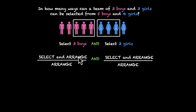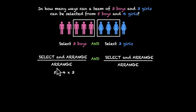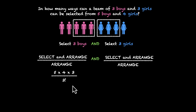If we're selecting and arranging — where order does matter — we pick the first boy, the second boy, and the third boy. The first boy can be picked in five ways, the next in four, and the third in three ways: 5 × 4 × 3. But the order does not matter — we're just selecting — so we divide by the number of ways of arranging: three factorial. Any group of three boys we pick can be arranged in three factorial ways, so we divide by three factorial. This gives us the number of ways of selecting three boys out of five.